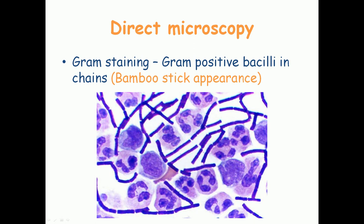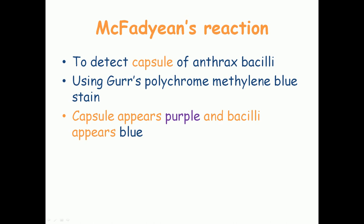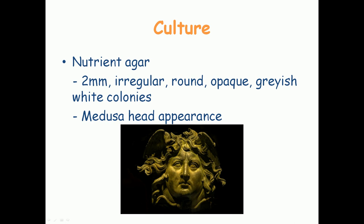For microscopy, performing a gram stain on the specimen and observing under a light microscope reveals gram-positive bacilli in chains, characteristically described as bamboo stick appearance — the rectangular purple bacilli are arranged in chains resembling a bamboo stick. There is also a reaction known as McFadyean's reaction, a test used to detect the capsule of anthrax bacilli. The stain used is Giemsa's polychrome methylene blue stain, in which the capsule appears purple and the bacilli appear blue.